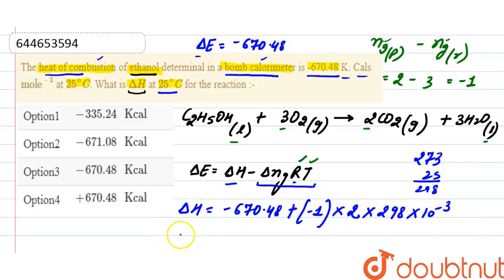From here, the value of enthalpy change equals -671.08 kilocalories, and the correct option here will be option 2: that enthalpy change is -671.08 kilocalories.